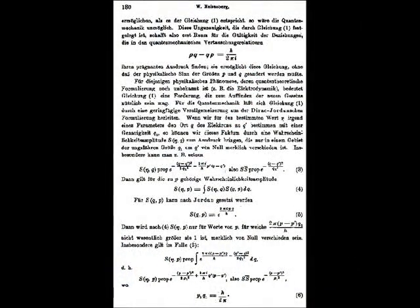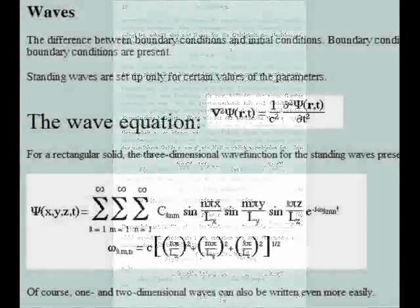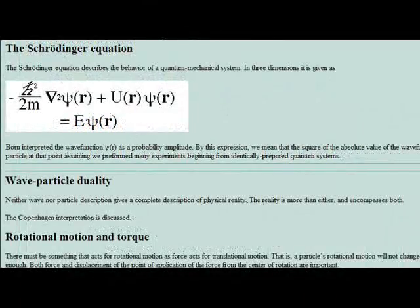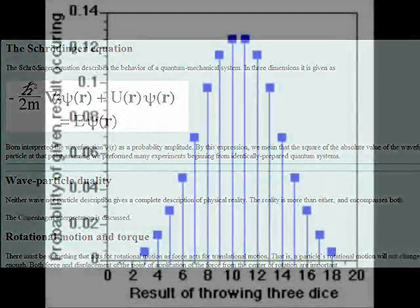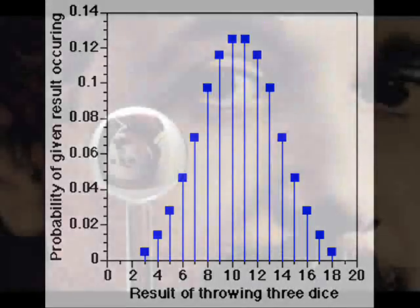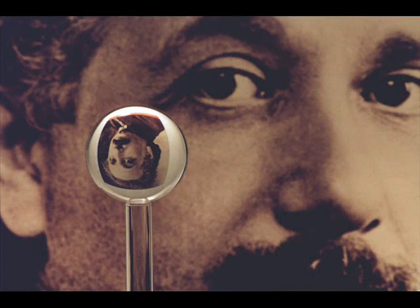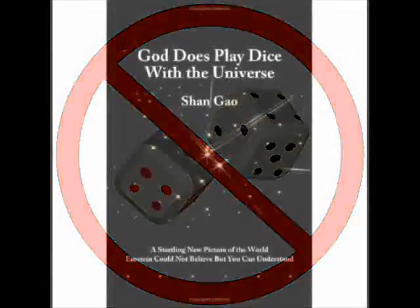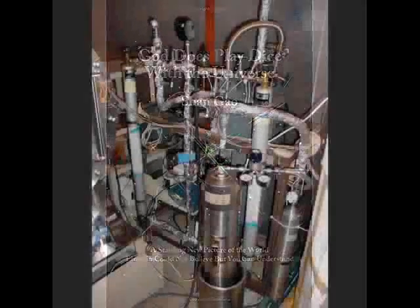Heisenberg developed this principle using a series of statistical probability matrices. The Schrödinger equation amounts to the same thing, but Schrödinger used wave functions to derive his model, as opposed to the matrix approach that Heisenberg took. They both amount to the same thing: the laws of quantum mechanics are probabilistic in nature. This is why Einstein didn't like quantum mechanics. He said, 'God does not play dice with the universe.' Well, apparently sometimes he does, because half of thermodynamics is based on statistical mechanics.